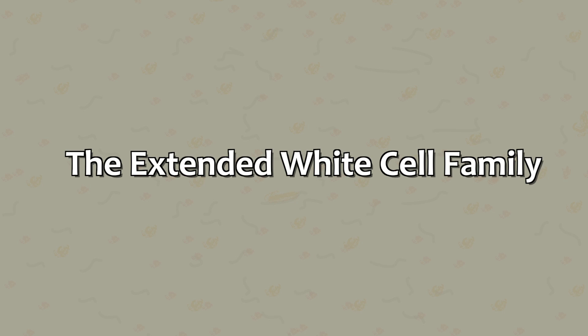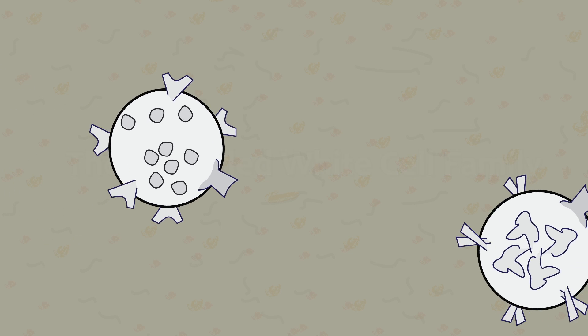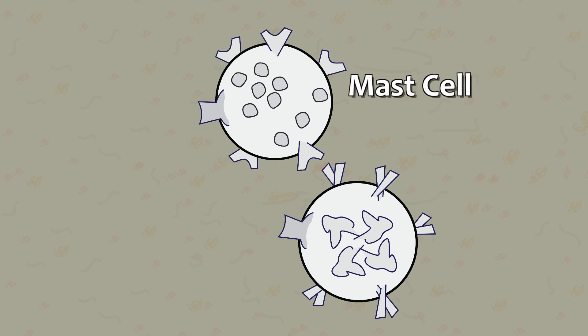In addition to the five primary groups of white cells, there are a few more types that you may want to be aware of: mast and auxiliary cells.